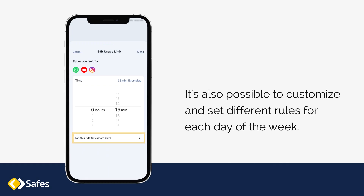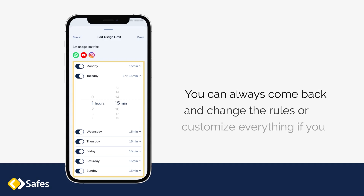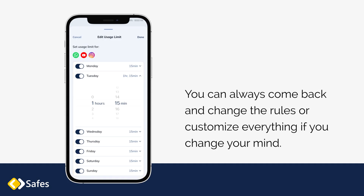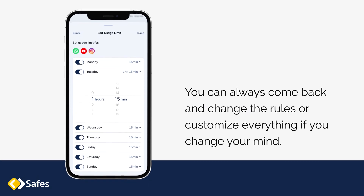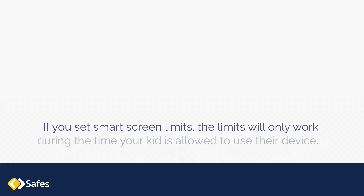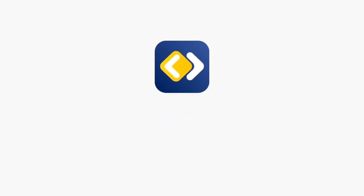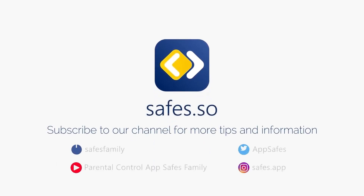It's also possible to customize and set different rules for each day of the week. You can always come back and change the rules or customize everything if you change your mind. Remember that only one rule at a time can apply to an app. If you set smart screen limits, the limits will only work during the time your kid is allowed to use their device.